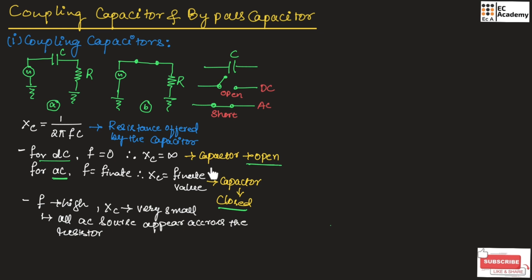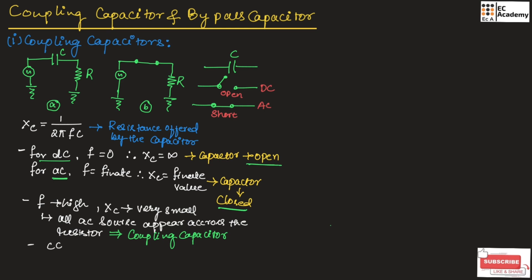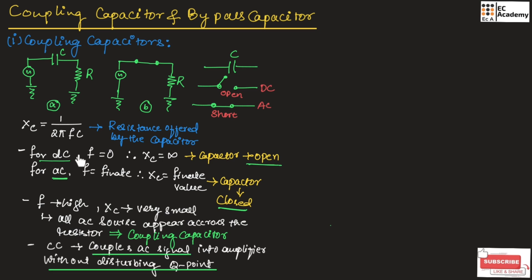The coupling capacitor has two functions: it will block the DC signal, and it will allow only the AC signal into and out of the circuit. Since it blocks the DC signal, it helps in maintaining the biasing of an amplifier circuit, and it allows only the AC signal into and outside the device. The coupling capacitor couples the AC signal into the amplifier without disturbing the Q point, since it blocks the DC signal and allows only the AC signal.